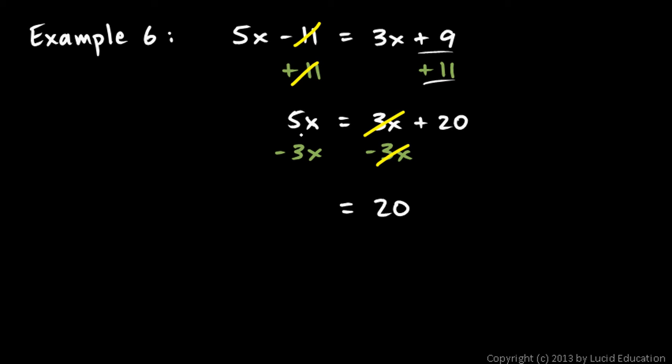So the right side is just 20. On the left, I have 5x minus 3x. And that is 2x.